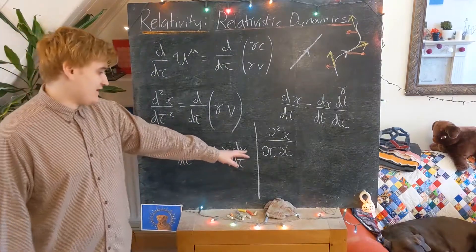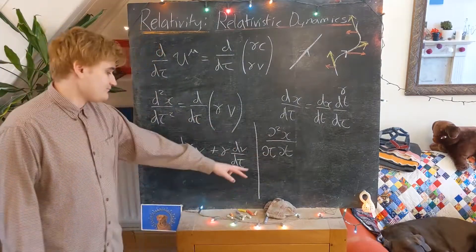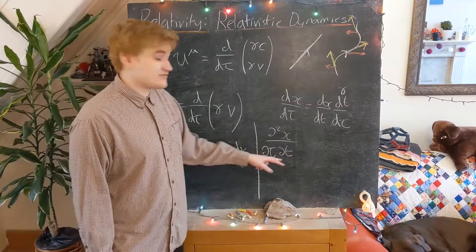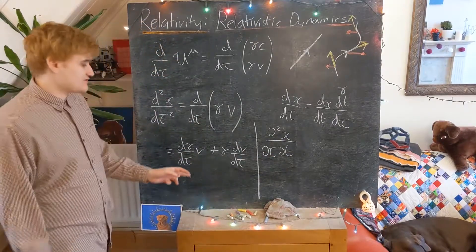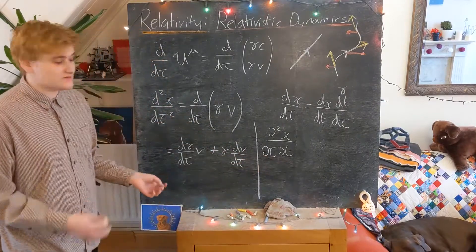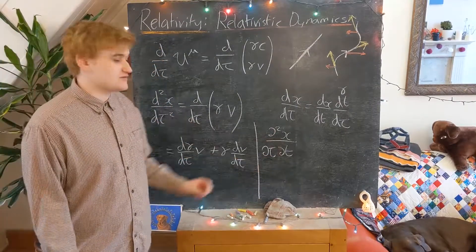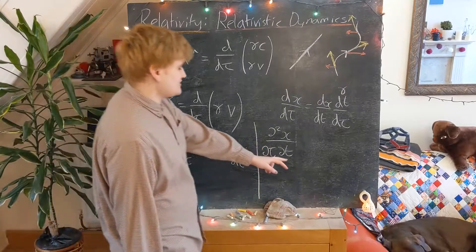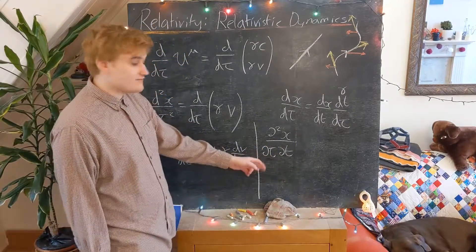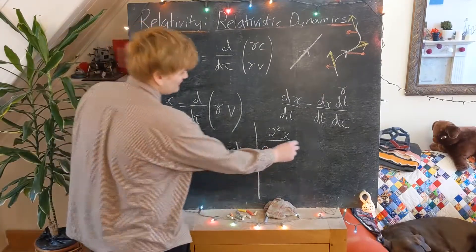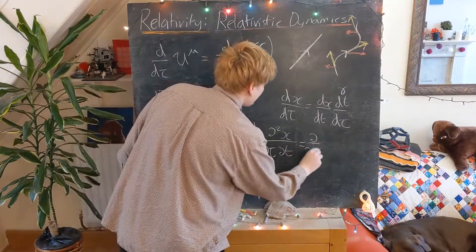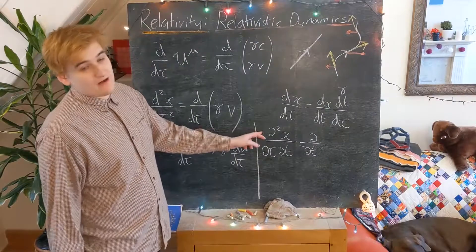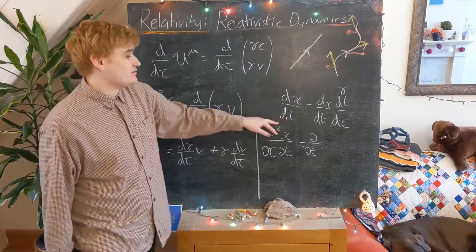So because v is dx by dt, taking this tau derivative just produces us this mixed partial. And so now because we know these mixed partials are going to have to commute, we can take them in any order that we like. We can just first take the tau derivative and then the t derivative. So that's going to give us a d by dt of now dx by d tau, which is what we have here.